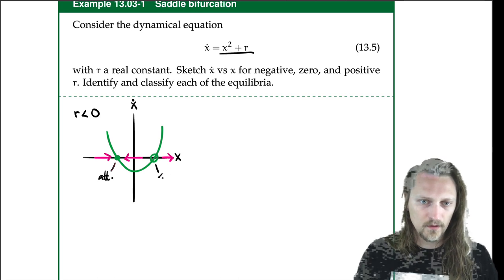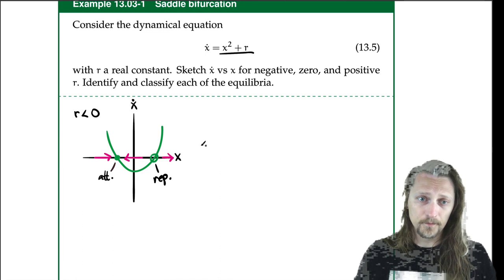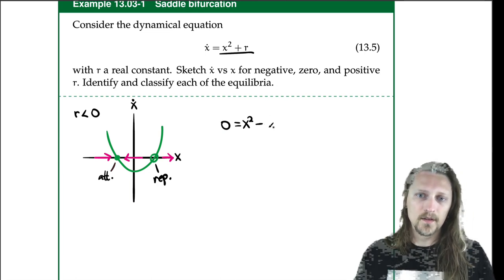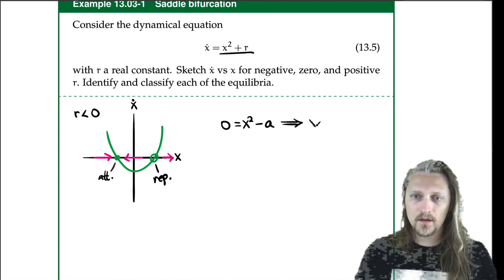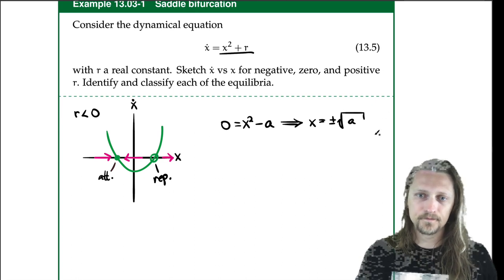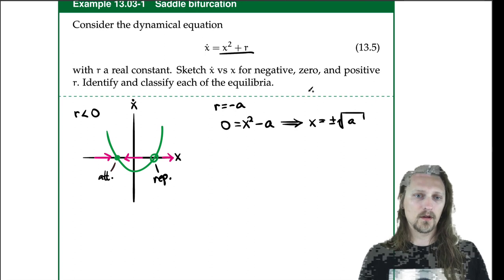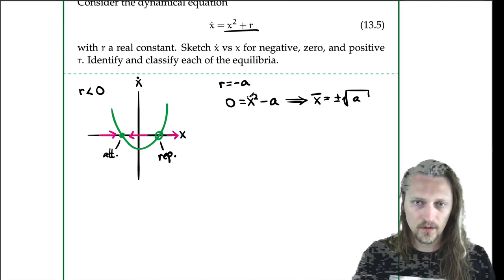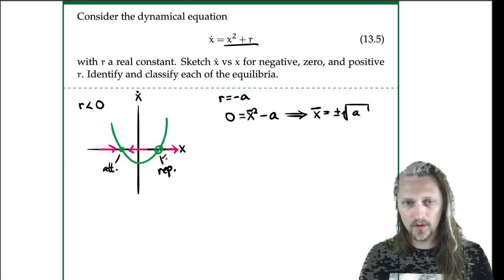We could find the equilibrium values by setting zero equals x-squared minus a, giving x-bar equals plus or minus the square root of a, where r equals negative a. So the negative equilibrium is the attractor and the positive equilibrium is the repeller.